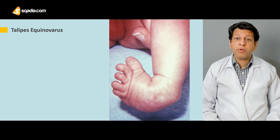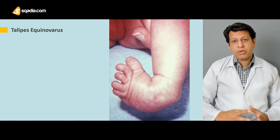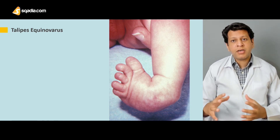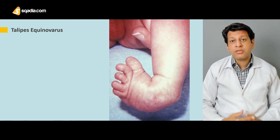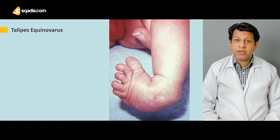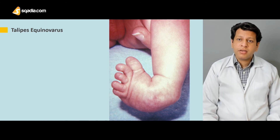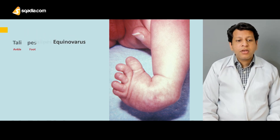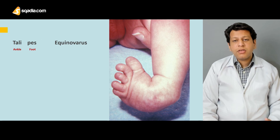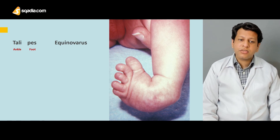The incidence is about 1 in 1,000 in the general population, but in certain populations — for example in Hawaii and other Pacific Ocean populations — it may be as high as 1 in 250. So it may be very common in certain populations as compared to the rest of the world.